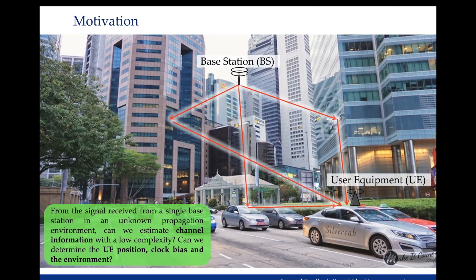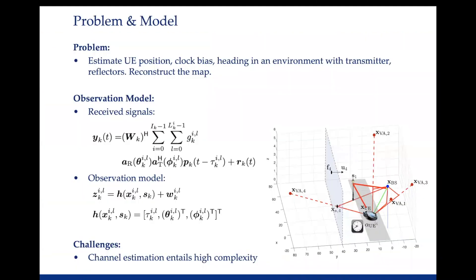We want to solve this problem with 5G technologies. The picture on the right is the same as the downtown Singapore scenario, but more mathematical. Here we have a base station whose position is already known, and a vehicle with unknown position, unknown heading, and unknown clock biases.